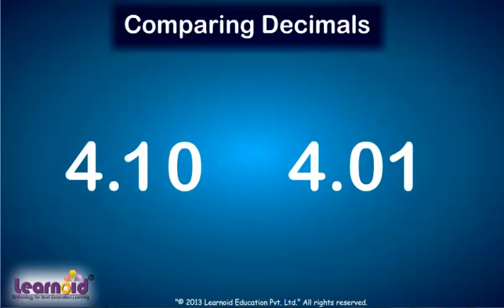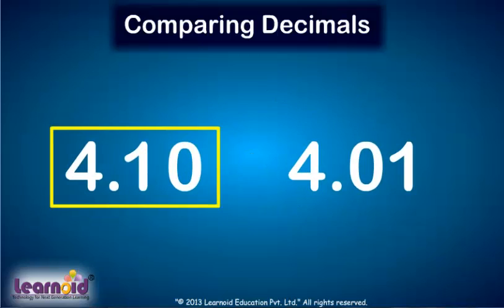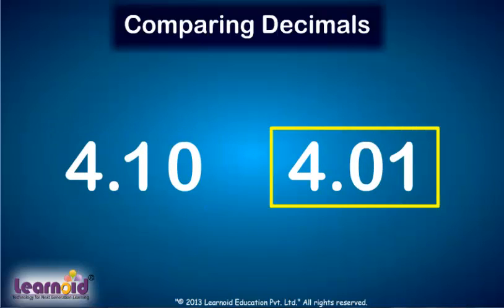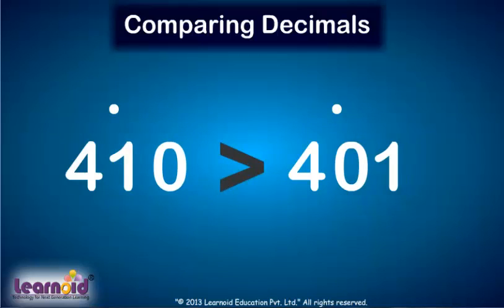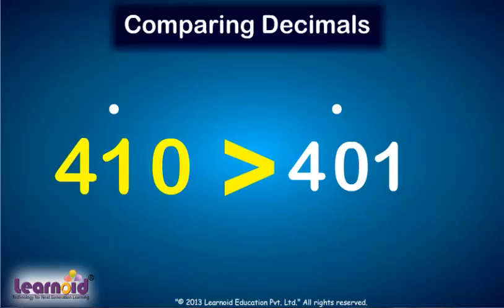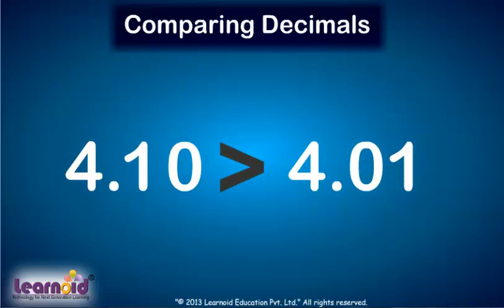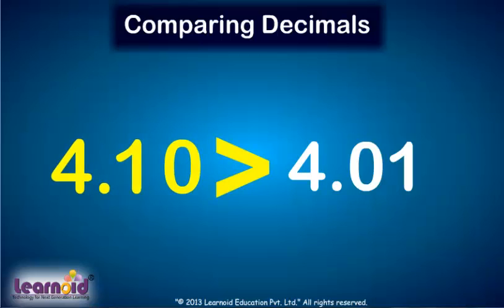Now we will compare 4.10 and 4.01 as numbers without a decimal. 410 is greater than 401. So 4.10 is greater than 4.01.